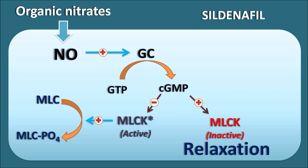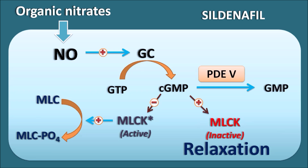Now let us see how sildenafil acts at this stage. Cyclic GMP can be converted into GMP by the phosphodiesterase type 5 enzyme. Sildenafil blocks this enzyme, thereby inhibiting the metabolism of cyclic GMP to GMP. In this way, sildenafil also increases cyclic GMP levels, thereby enhancing the nitric oxide-mediated vasodilatation produced by organic nitrates.